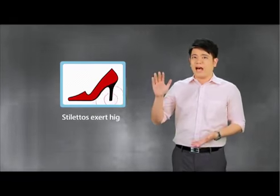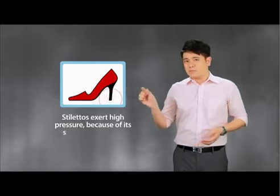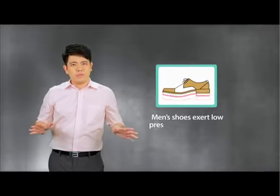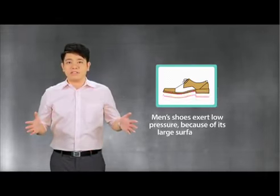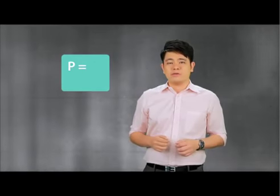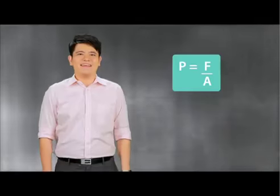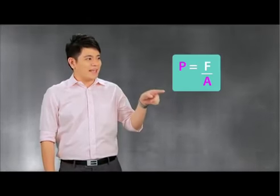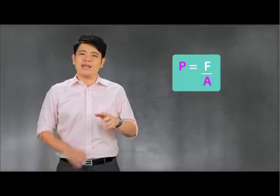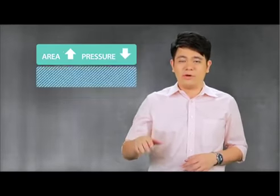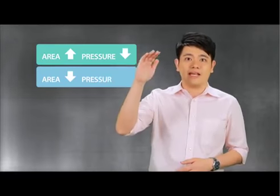So, what is pressure? One easy example is women's shoes, like stilettos, which have high pressure because of their small surface area. Whereas men's shoes have very low pressure because of their large surface area. The most common formula for pressure is P equals F over A. The P is on top and the A is at the bottom, which means they are inversely proportional. When the area is large, the pressure is low. When the area is small, the pressure is high.